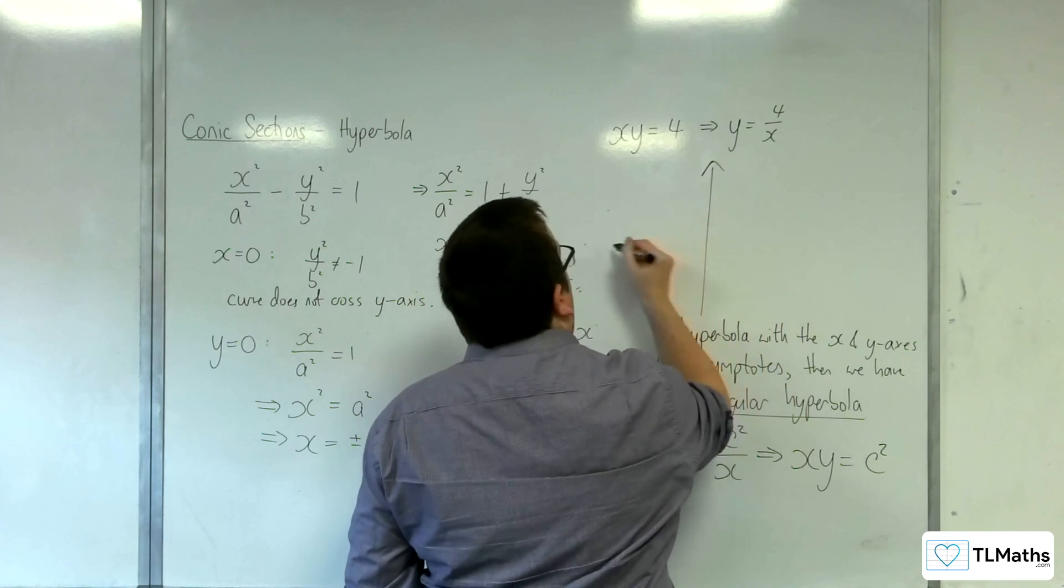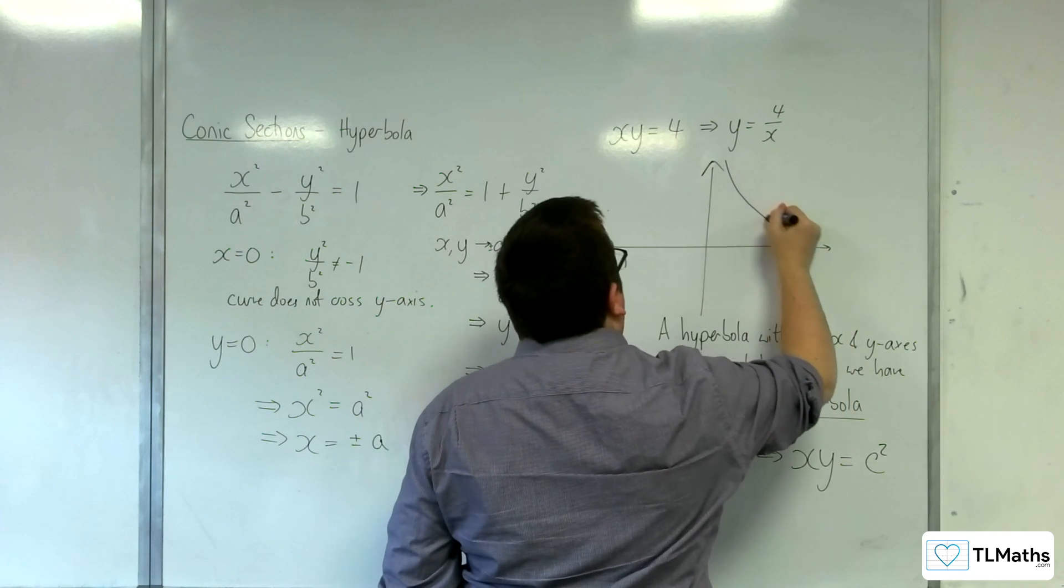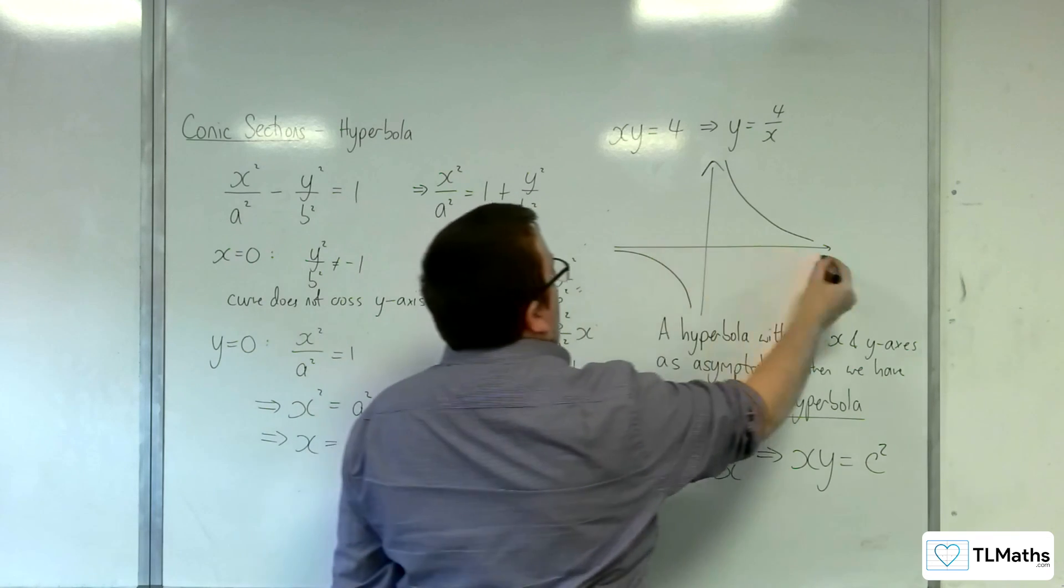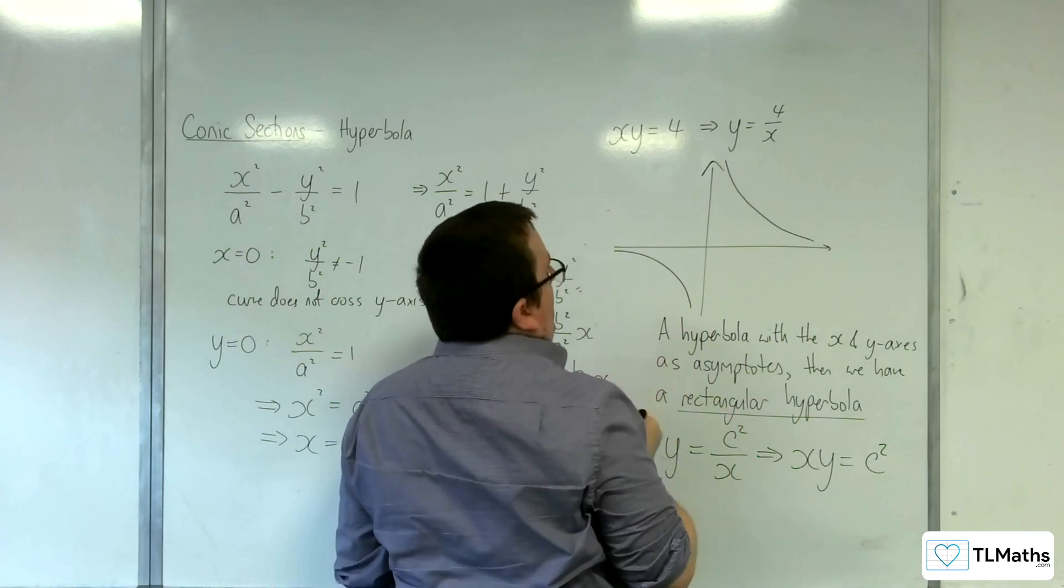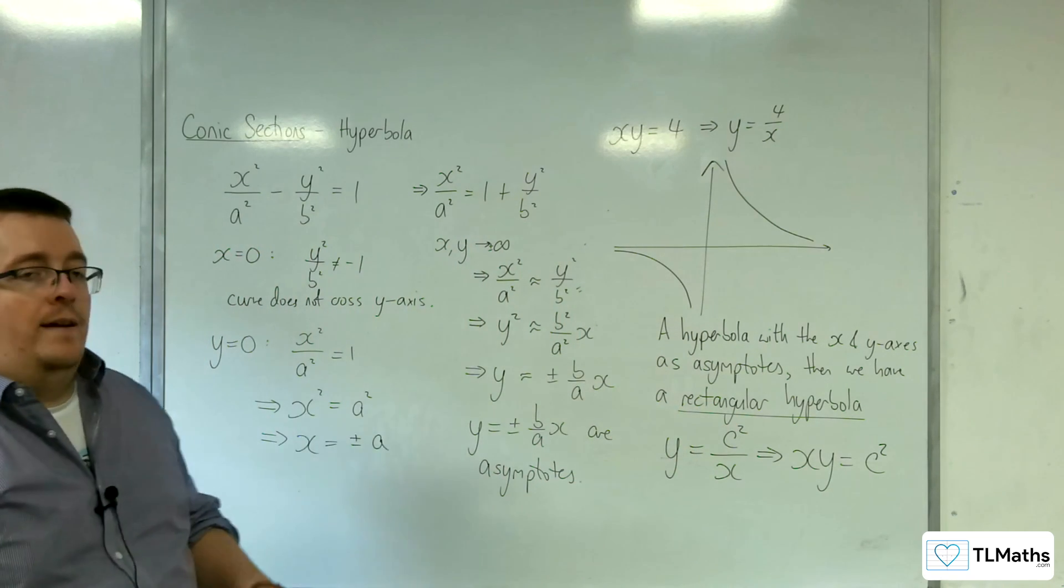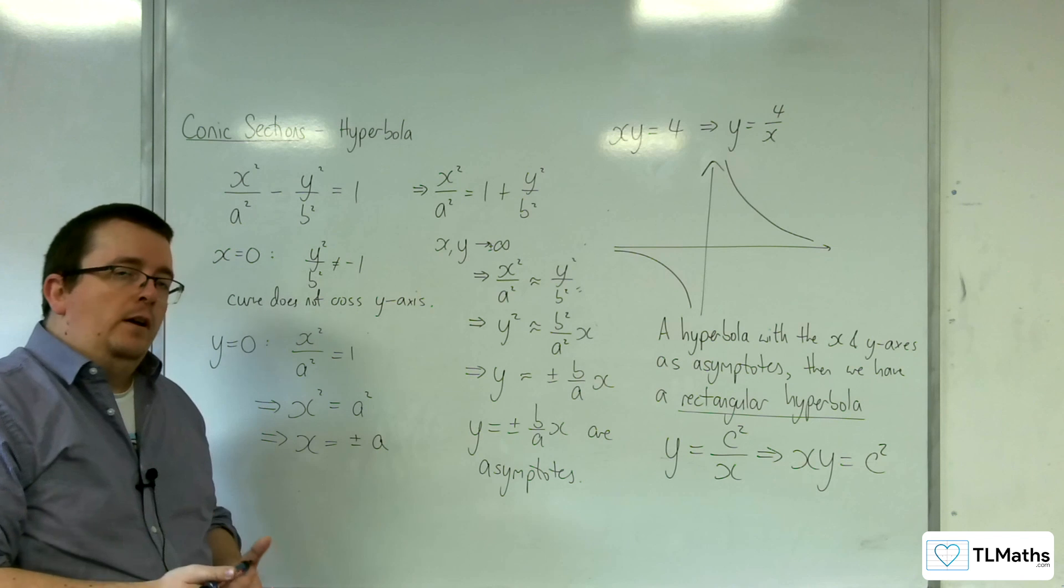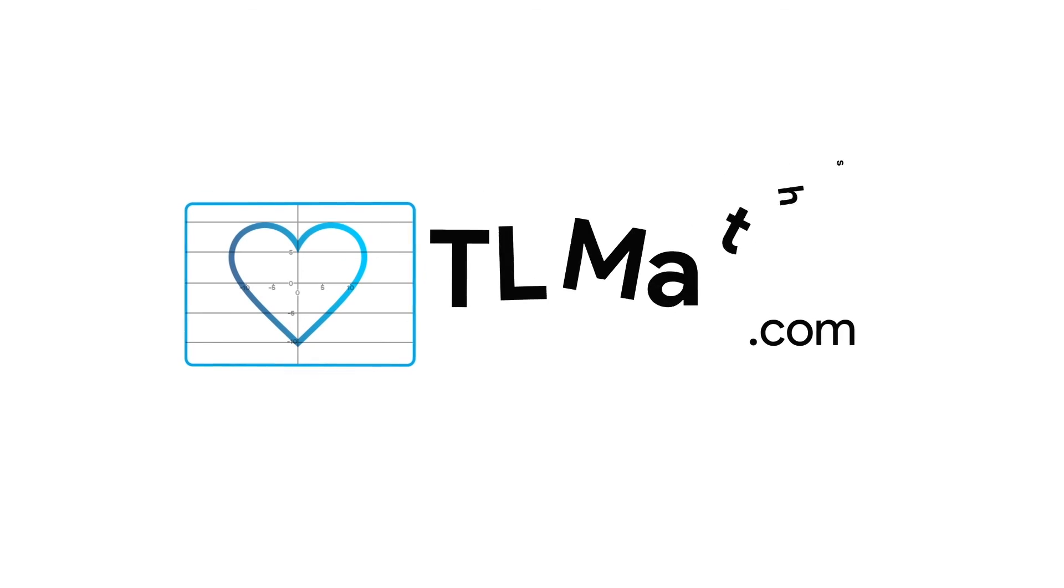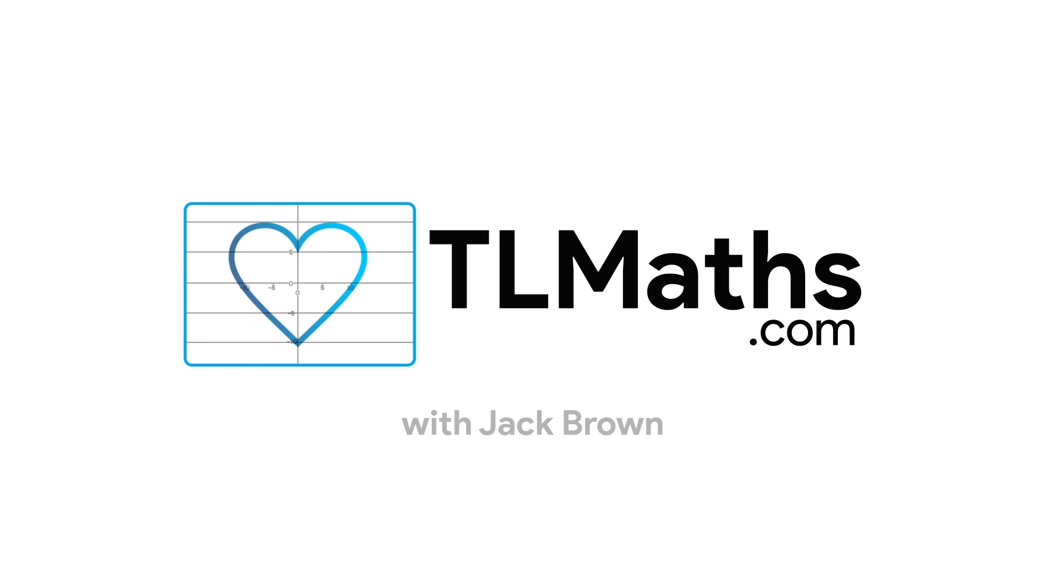So example of that would be xy equals 4, for example, which is y is equal to 4 over x. So your graph looks like this, so it has the asymptotes at the x and y-axis, which are at right angles to one another, hence you have that title of rectangular hyperbola.